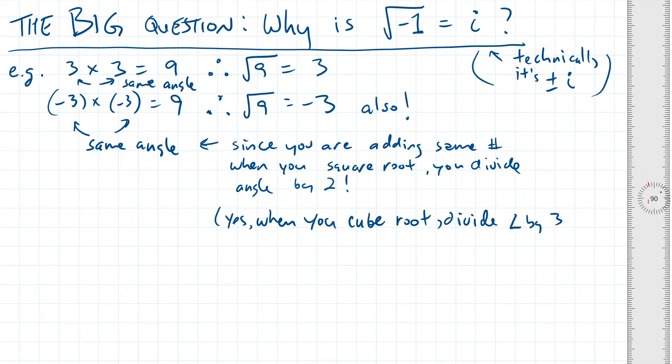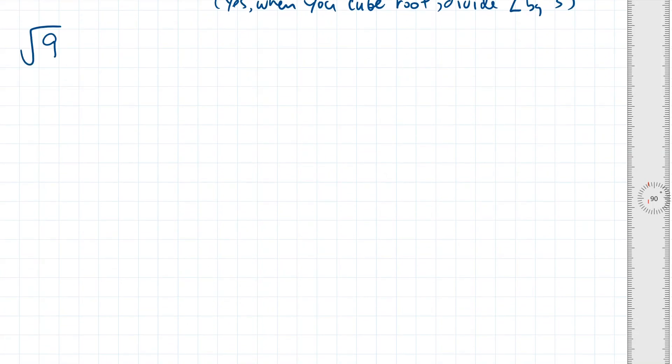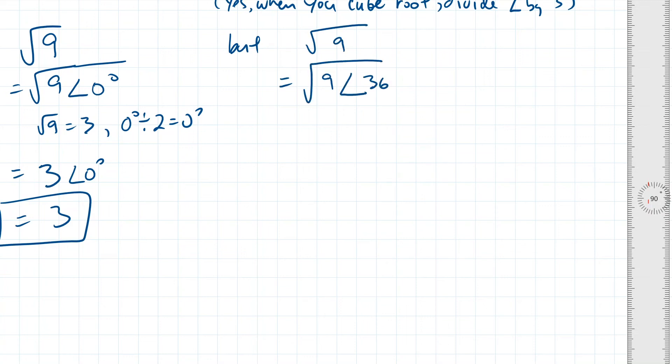For example, the square root of positive 9 is the same as the square root of 9 with a phase shift of 0 degrees. Now the square root of 9 by itself is 3, and half of 0 is still 0. So the square root of 9 is 3. But wait, there's a second possible answer. What do you define 9 as 9 with a phase shift of 360 degrees? Well, the square root of 9 is still 3, but this time around, half of 360 degrees is 180. So the square root of positive 9 can also be written as 3 with a phase shift of 180 degrees, or negative 3. Remember, 3 times 3 is 9, and negative 3 times negative 3 is also 9. So there are two correct answers to the square root of 9.